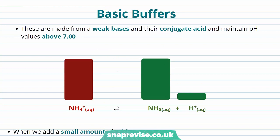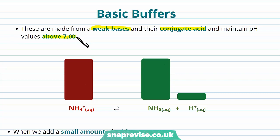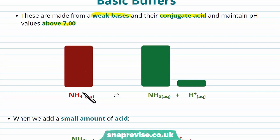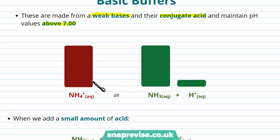Basic buffers are very similar to acidic buffers, except they're made from weak bases instead of weak acids, combined with the conjugate acid — it's just the other way round. These maintain pH values of above 7.0. They work in a very similar way using equilibria: you have an excess of the conjugate acid and an excess of the weak base, so any changes to H+ get resisted effectively by Le Chatelier's principle. If you add H+, it's used up; if you take H+ away, more of the conjugate acid will dissociate.